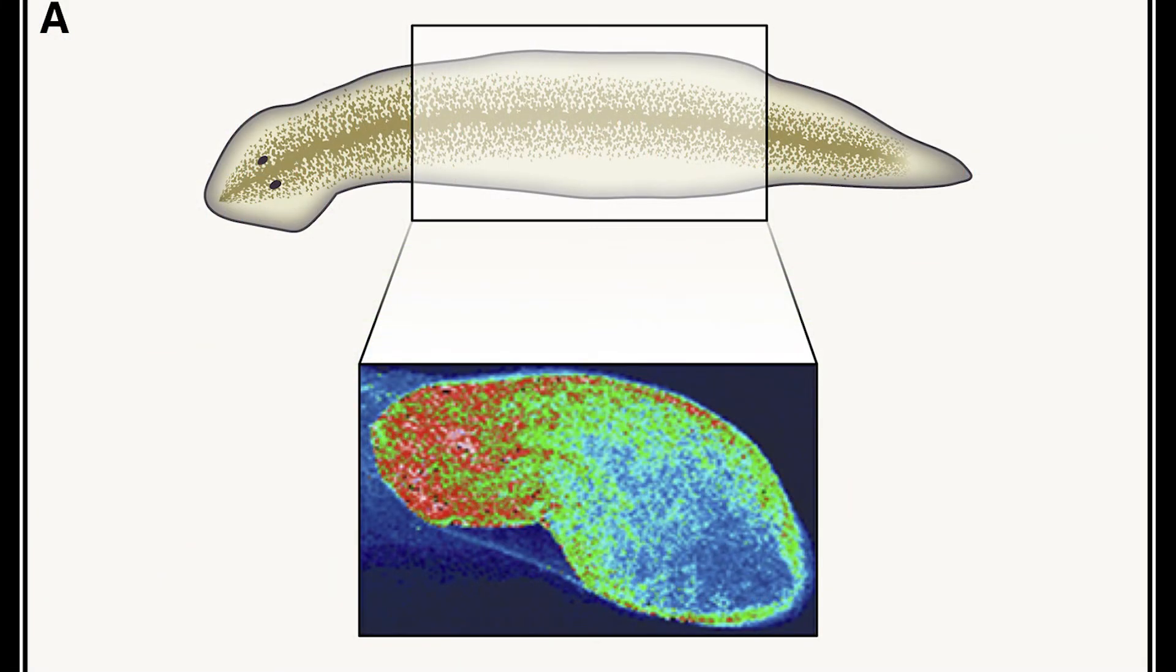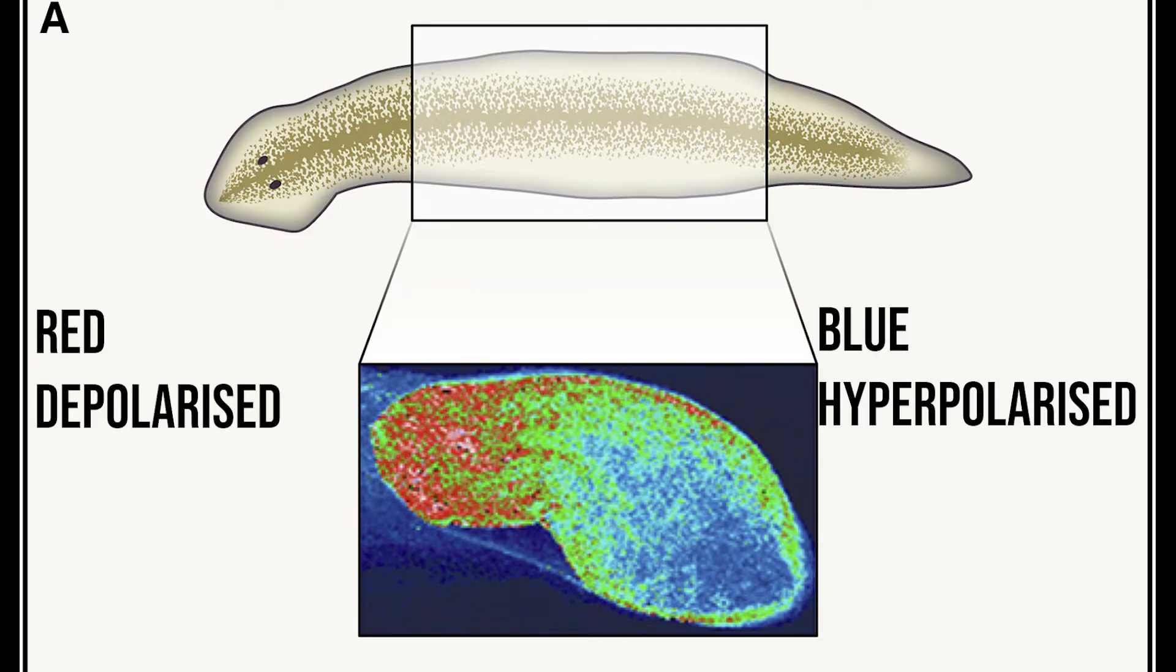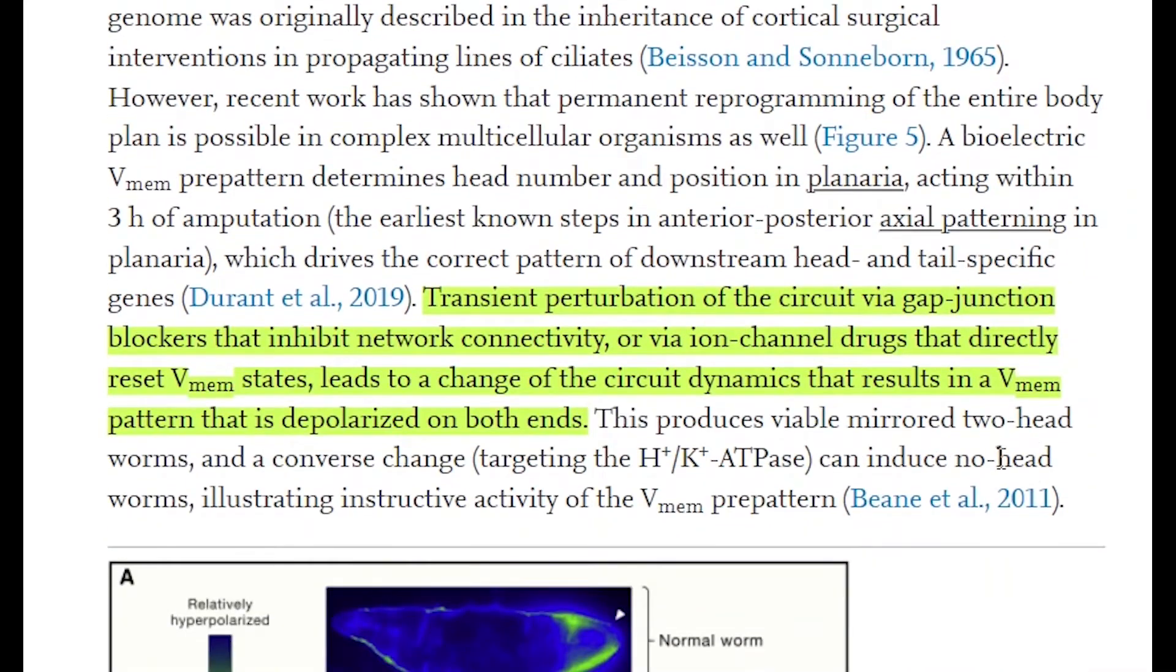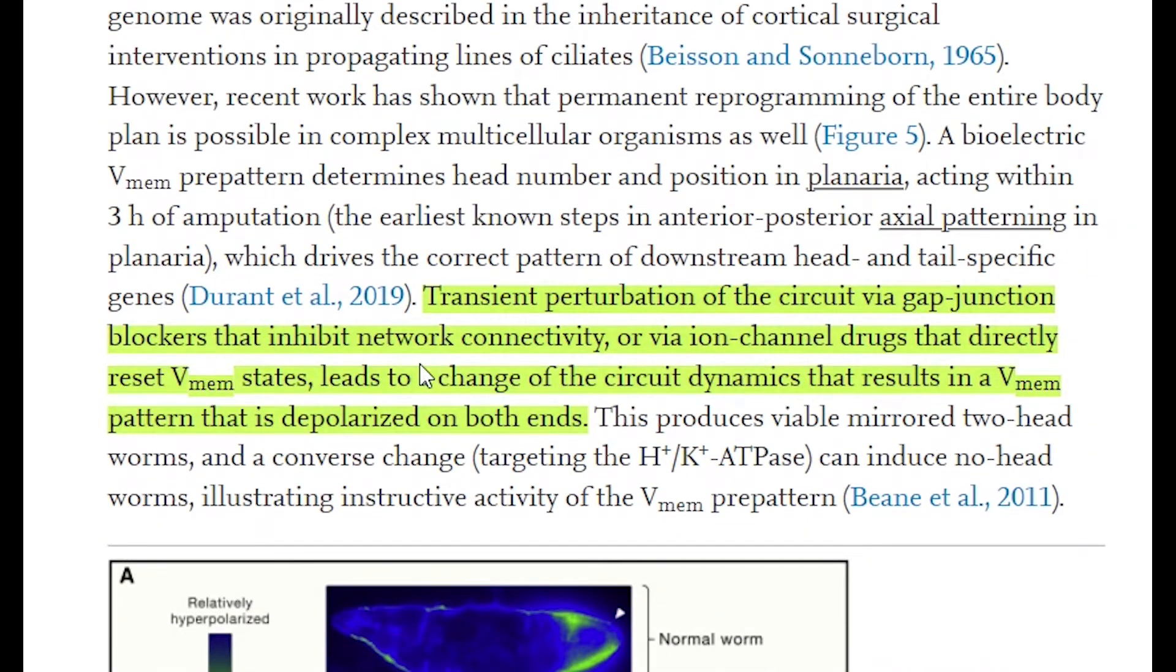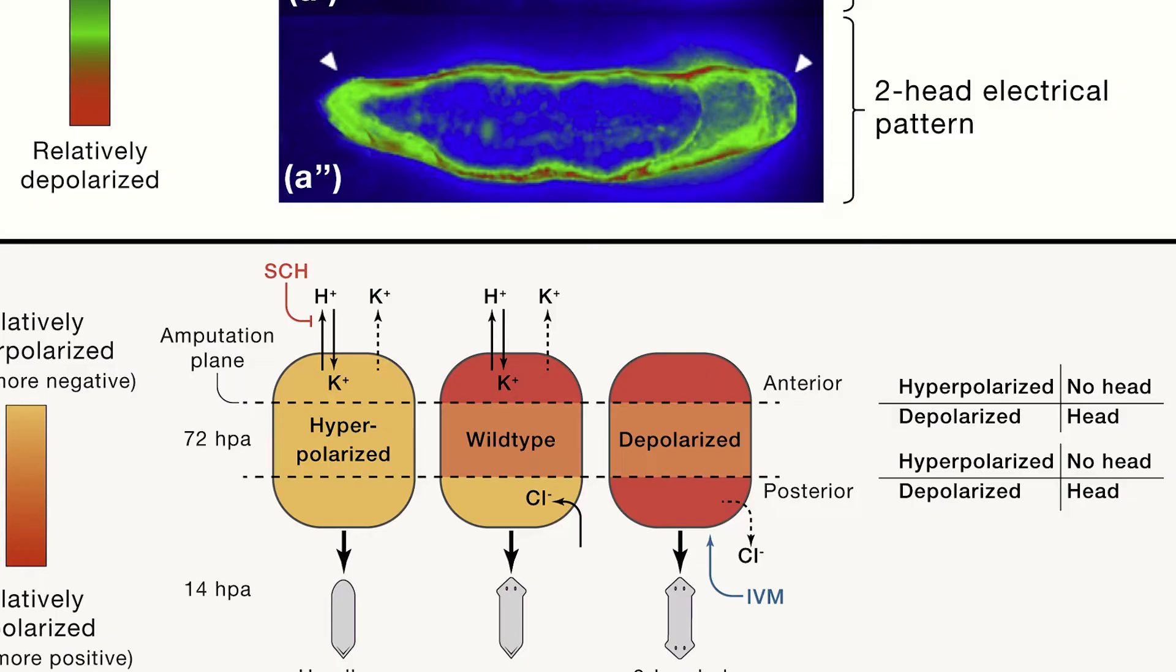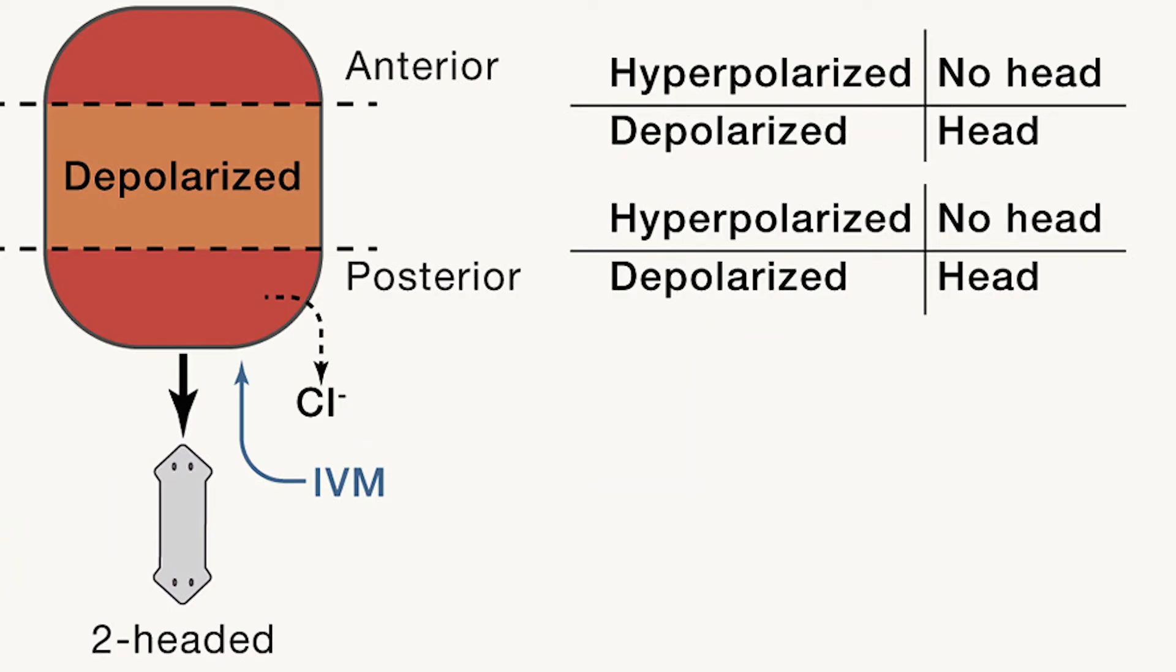So let's return to that planarian I showed you earlier, with the red depolarized region forming a head and the blue hyperpolarized section forming the tail. Well, the interesting thing is that experimentally you can transiently perturb this pattern by using different blockers that inhibit proteins, such as drugs that inhibit these ion channel proteins. And so what that effectively does is it resets the membrane potential, and so it results in both sides of the planarian being depolarized. So what would you expect? Well, two heads, of course, which is what you can see here.